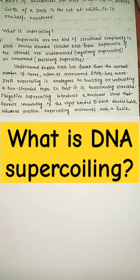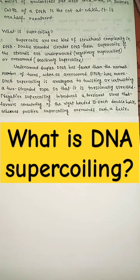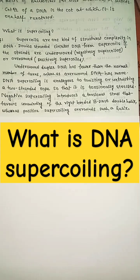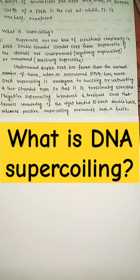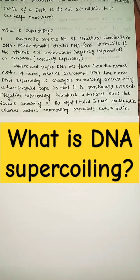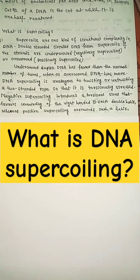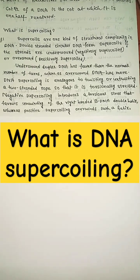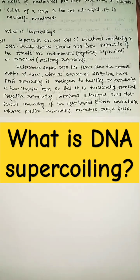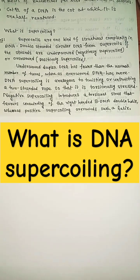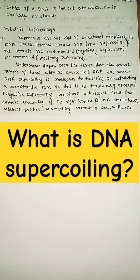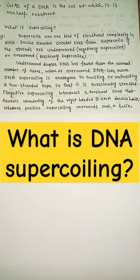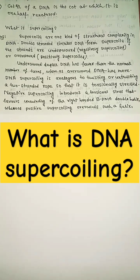DNA supercoiling is analogous to twisting or untwisting a two-stranded rope so that it is torsionally stressed. Negative supercoiling introduces a torsional stress that favors unwinding of the right-handed B-DNA double helix, whereas positive supercoiling overwounds such a helix.